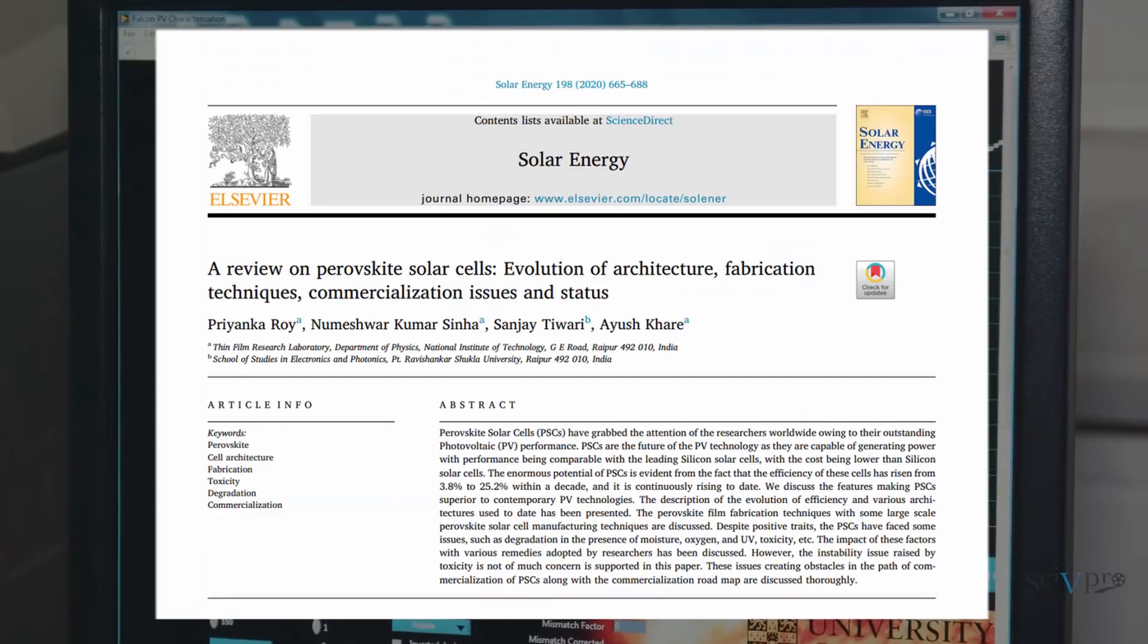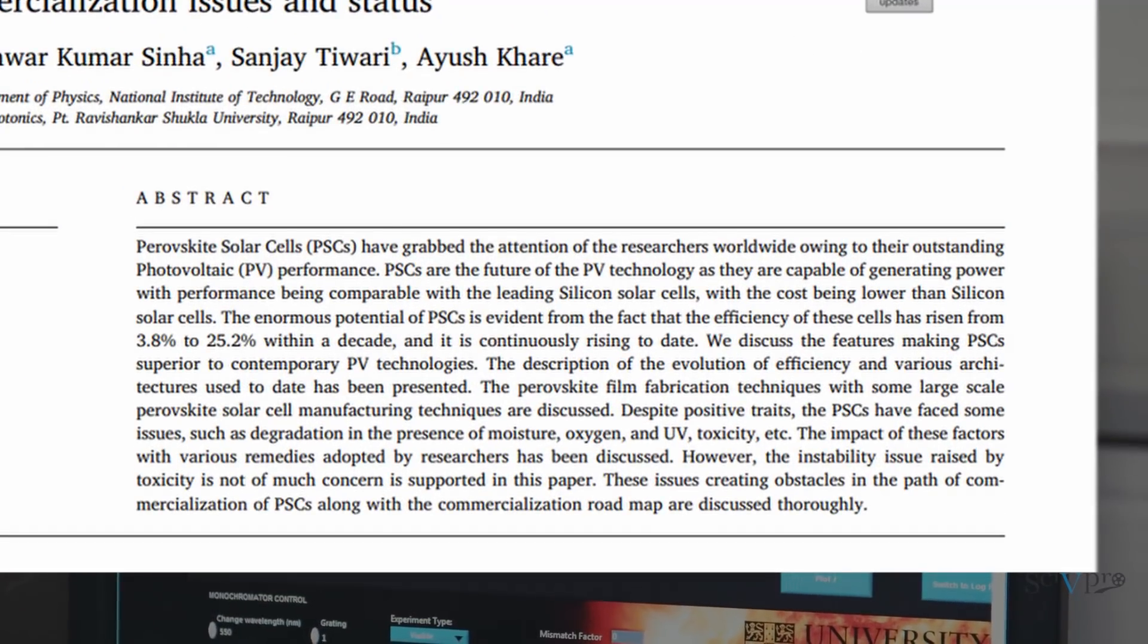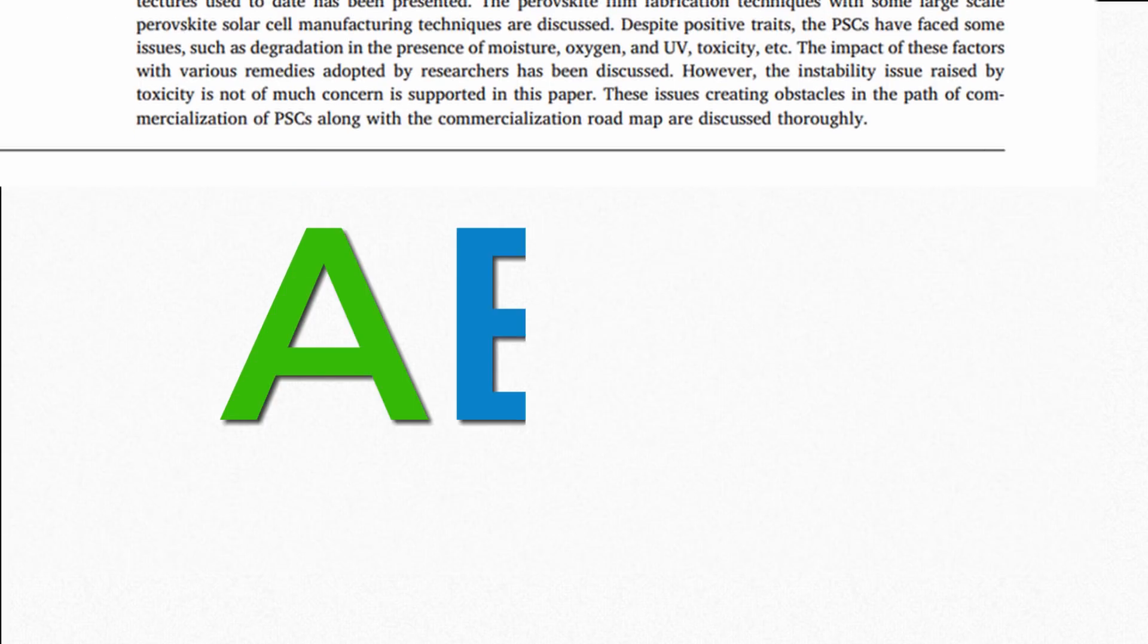Perovskite solar cells have achieved remarkable growth since their inception a decade ago, sharply increasing in efficiency from 3.8% to 25.2%. These are made from a crystal of the form ABX3.